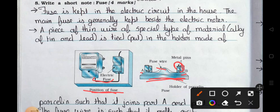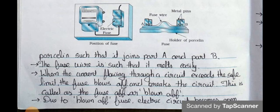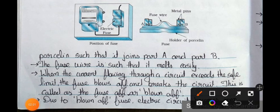Now see answer: Fuse is kept in the electric circuit in the house. The main fuse is generally kept beside the electric meter. A piece of thin wire of special type of material, alloy of tin and lead, is tied or put in the holder made up of porcelain such that it joins part A and B.